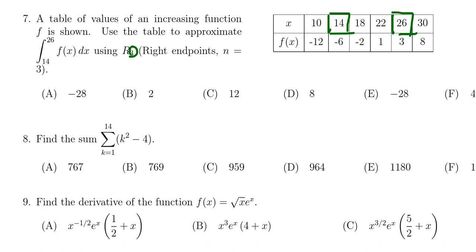Because we're using R3 for this one, that means n equals 3, which tells us our delta x is going to equal 26 minus 14 over 3. When we do the arithmetic there, we get 12 over 3. That is, we get a delta x of 4.